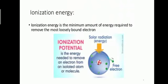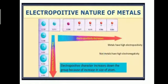Ionization energy is the minimum amount of energy required to remove the most loosely bound electron — meaning the electron present in the outermost shell can be easily removed and delocalized. This relates to the electropositive nature of the element.